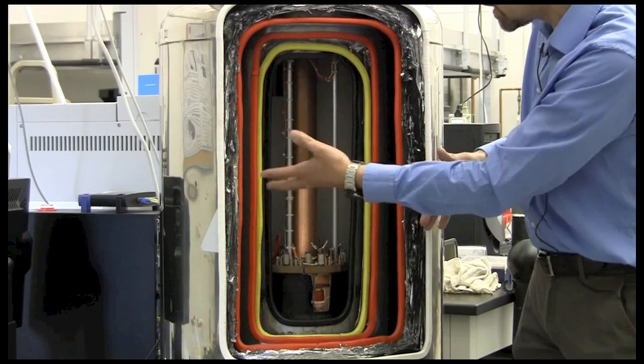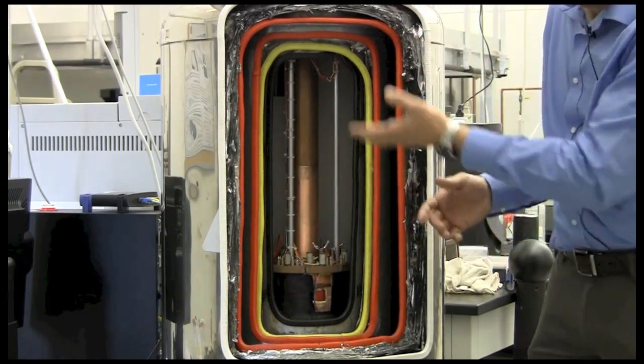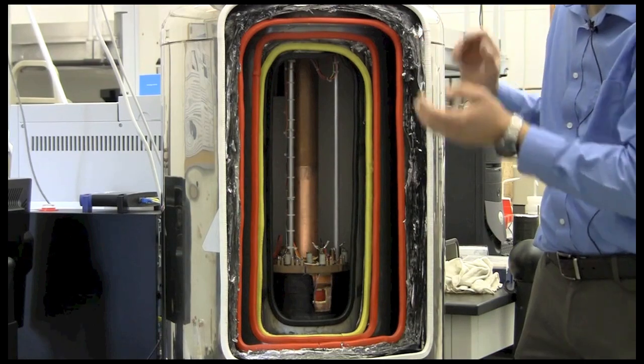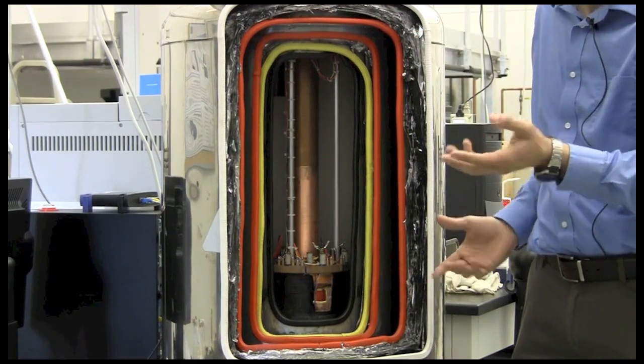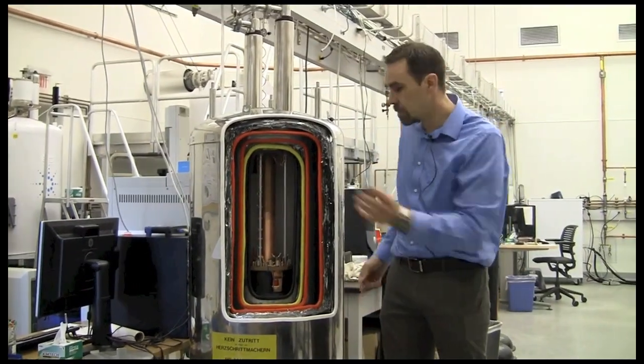So when it evaporates, it goes out of the top of the magnet. And if we don't recapture it, it just goes out into the atmosphere. But now with our recovery system, we can collect it, purify it, reliquify it, and then put it back into our magnet.